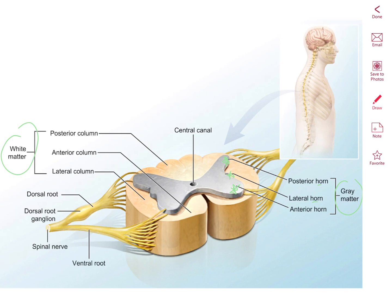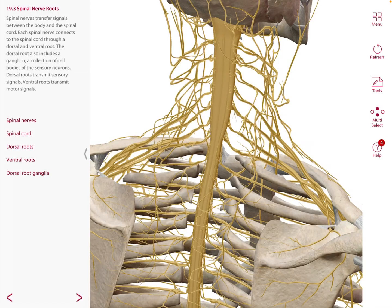Surrounding the gray matter is the white matter, formed by myelinated and unmyelinated axons organized into columns that pass information up and down the spinal cord. We have the posterior column, lateral column, and anterior column. Coming out of the white matter columns we have the ventral root and dorsal root. Posteriorly there is also the dorsal root ganglion, and both of these roots merge to form a spinal nerve. We have 31 pairs of spinal nerves.